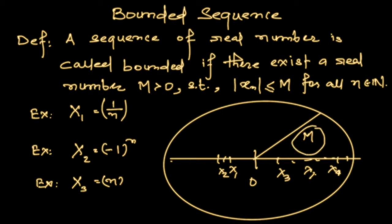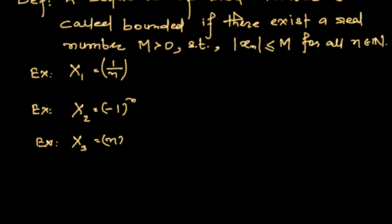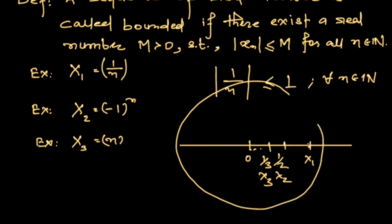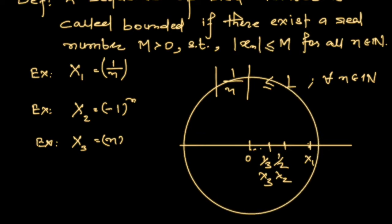If we can find such M, we say that the sequence is bounded. Consider the sequence 1/n. We can say that |1/n| ≤ 1 for all n belonging to the natural numbers, so this sequence is bounded. If you draw the sequence, the first term is 1, the second term is 1/2, the third term is 1/3, and so on. You can make a circle of large enough radius, which implies the sequence is bounded.